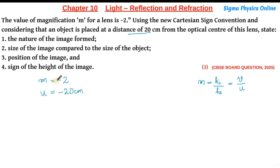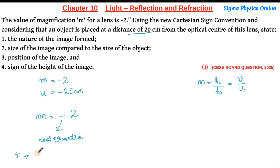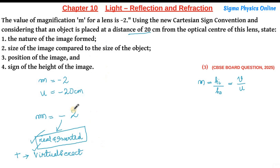Looking at the magnification value, we can find out the nature of the image. The magnification value is minus 2. The negative or positive sign associated with the magnification value depicts the nature of the image. If the sign is negative, the image is real and inverted. If the magnification sign is positive, the image is virtual and erect. Since we have a negative magnification value, the image formed is real and inverted.